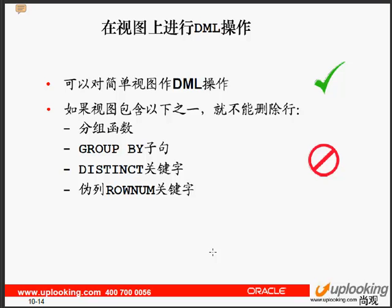复杂的视图包含函数、分组语句、运算符和表达式，以及查询多个表的情况。视图上重点要掌握能否进行DML操作，简单的视图是可以的，复杂的视图不可以。DELETE操作的四个限制条件是：视图的子查询中包含了分组函数、GROUP BY 语句、去除重复行（DISTINCT）的语句，以及 ROW_NUMBER 虚列。